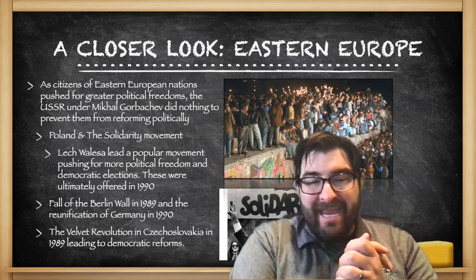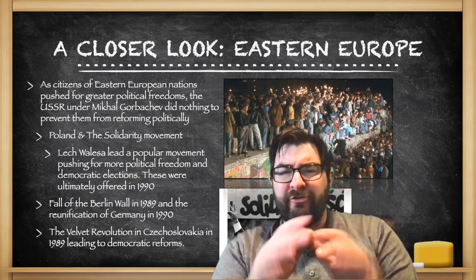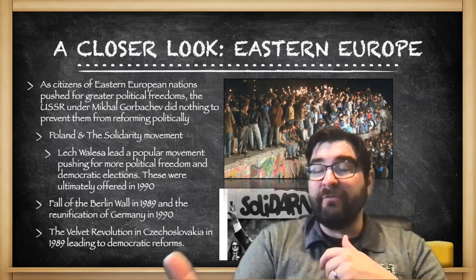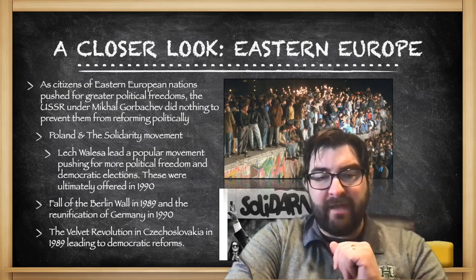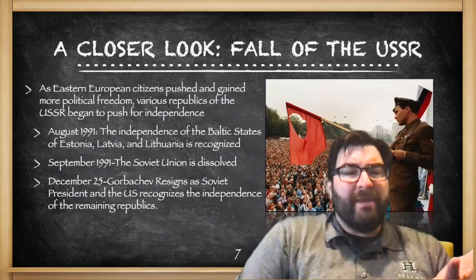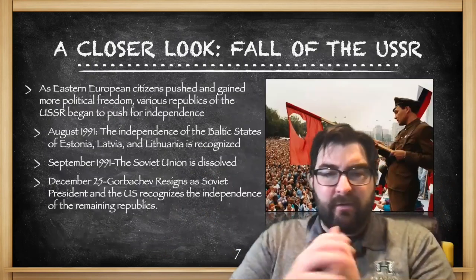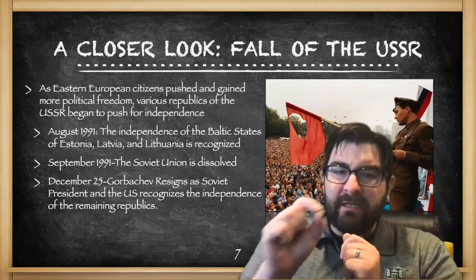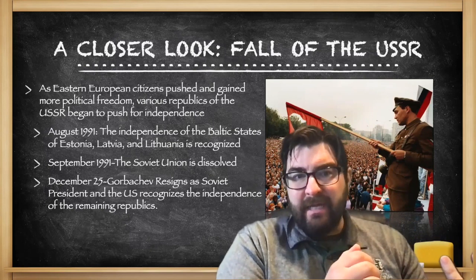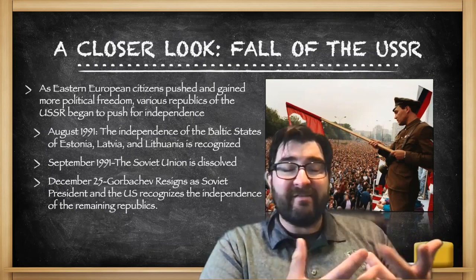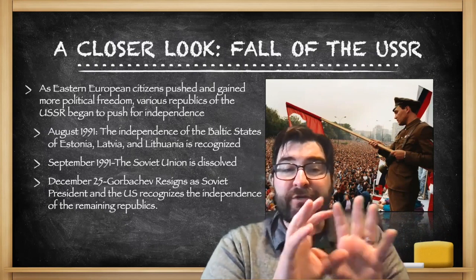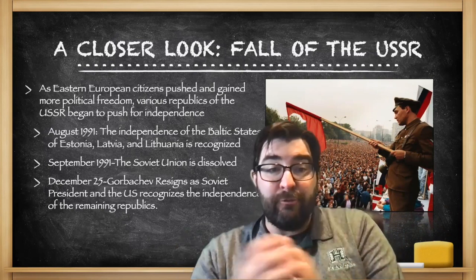In 1989, the Velvet Revolution — called that because it wasn't violent, it was kind of soft — took place in Czechoslovakia, leading to democratic reforms and an end of the communist government there. As Eastern European citizens pushed and gained more political freedom, various republics of the Soviet Union started to do the same. In August of 1991, the Baltic states of Estonia, Latvia, and Lithuania pushed for independence and ultimately received it.